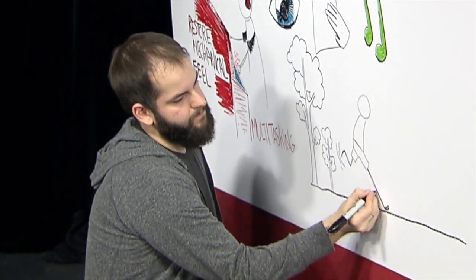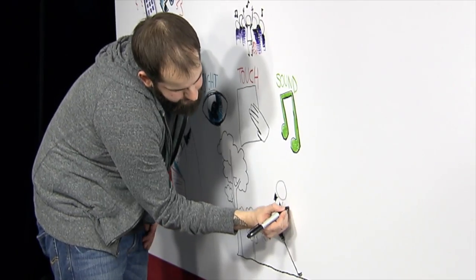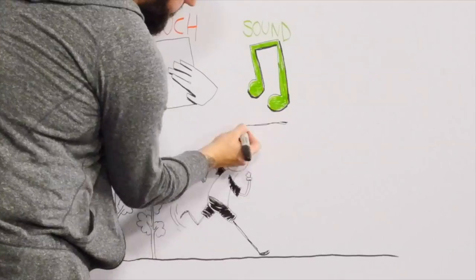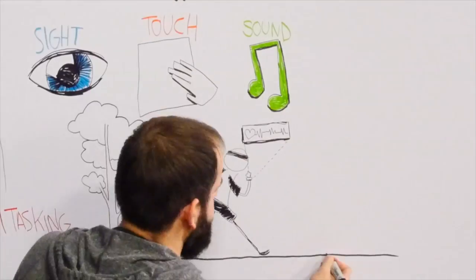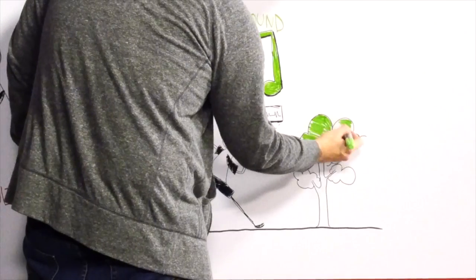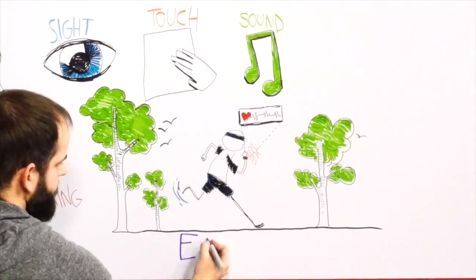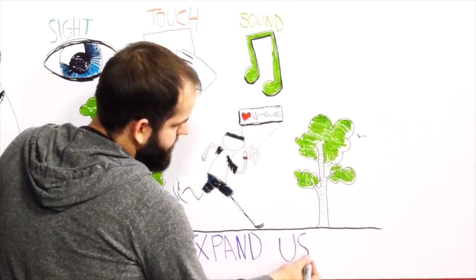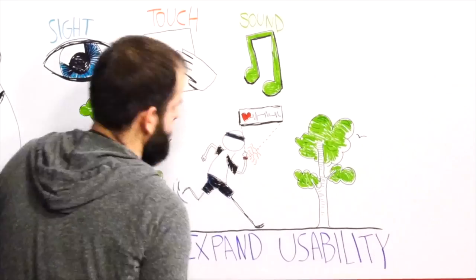Haptics can also enable multitasking in safety-critical applications, like working with heavy machinery or driving, letting you use a device without looking away from the task at hand. Finally, haptics can expand usability in systems, delivering personal alerts when and where they are needed to keep you safe.